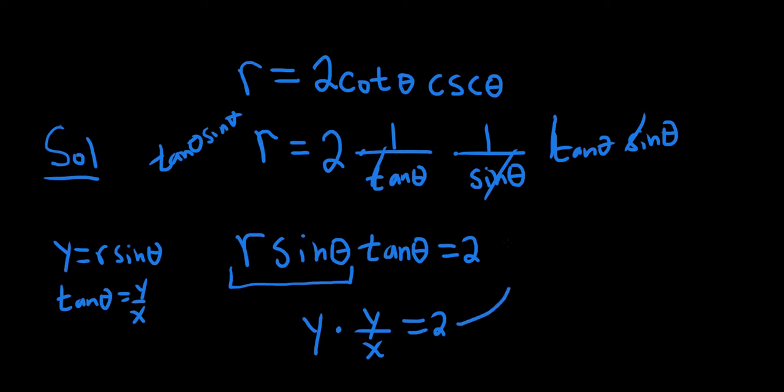So this leads us to y squared over x equals 2. Then you can multiply both sides by x, and that'll give us y squared equals 2x. And that's it. That's the rectangular equation.